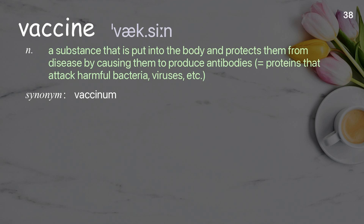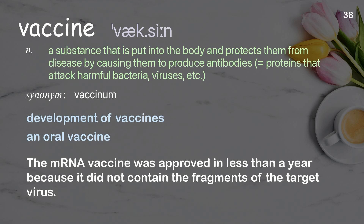Vaccine: A substance that is put into the body and protects them from disease by causing them to produce antibodies — proteins that attack harmful bacteria, viruses, etc. Examples: Development of vaccines, An oral vaccine. The mRNA vaccine was approved in less than a year because it did not contain the fragments of the target virus.